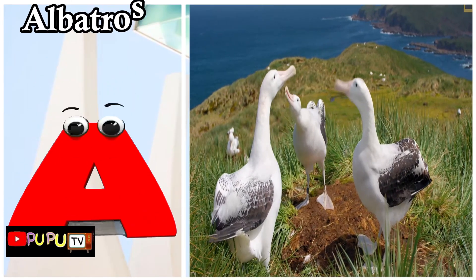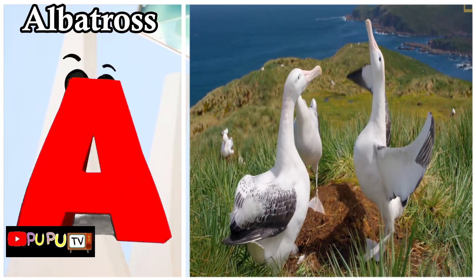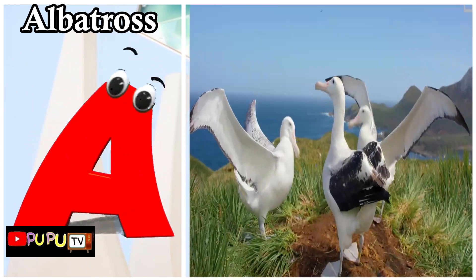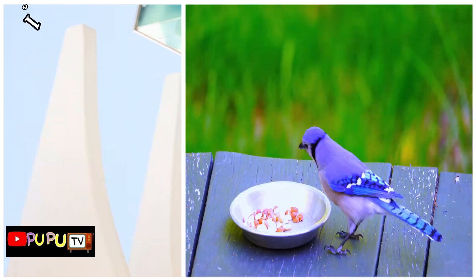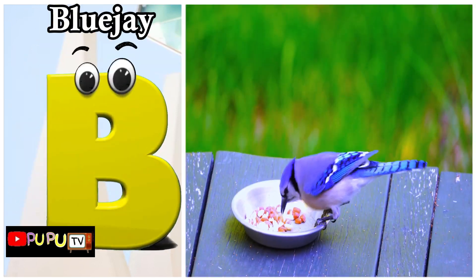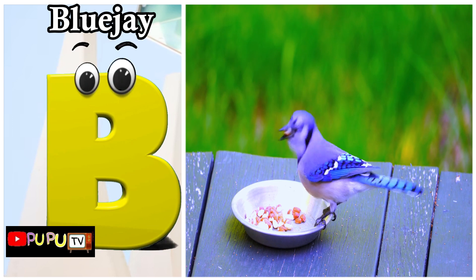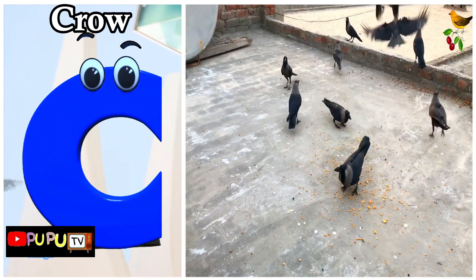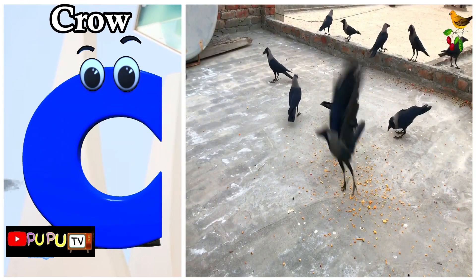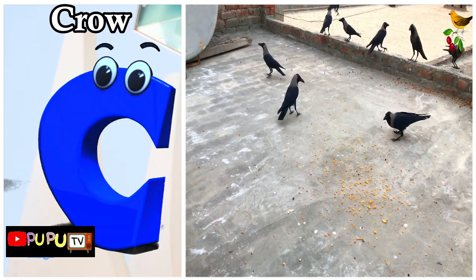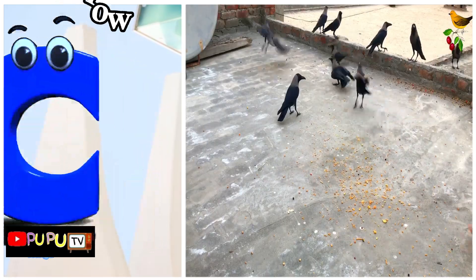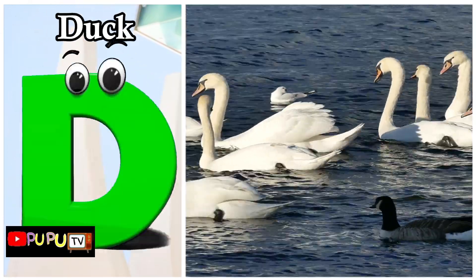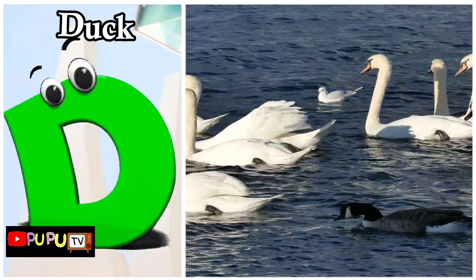A is for albatross, ah ah albatross. B is for blue jay, buh buh blue jay. C is for crow, kuh kuh crow. D is for duck, duh duh duck.